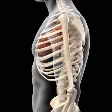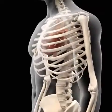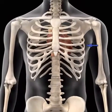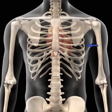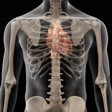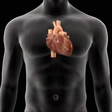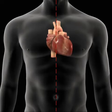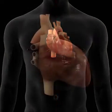The apical impulse, or apex beat, can be palpated in the fourth or fifth intercostal space, near the midclavicular line. A third part of the heart is located towards the right of the midline, and two-thirds of its mass lies to the left.